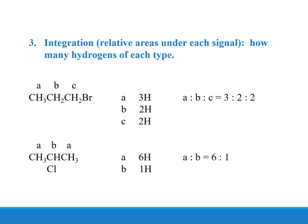Integration tells us the relative areas under each signal and how many hydrogens are present. Analyzing the first brominated molecule, we have three signals A, B, and C: A has three protons, B has two, and C has two, giving a ratio of 3:2. In the next example, a symmetrical molecule has CH3 groups giving six protons for signal A and one proton for signal B, with a ratio of 6:1.